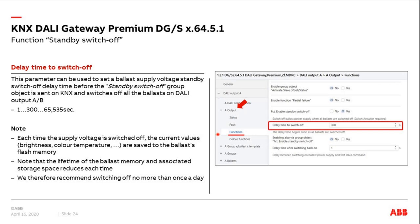The next parameter is the delay time to switch off. This means the gateway knows all 64 ballasts are switched off. After this time — for example, typically 300 seconds — the DALI gateway sends the group address with value 0 to switch off the supply voltage for the ballasts. Important to know: every time a ballast loses supply voltage, it saves current values like brightness or color temperature to flash memory. Since each write affects the ballast's lifetime, we recommend not using this function every few minutes — only overnight or over the weekend.